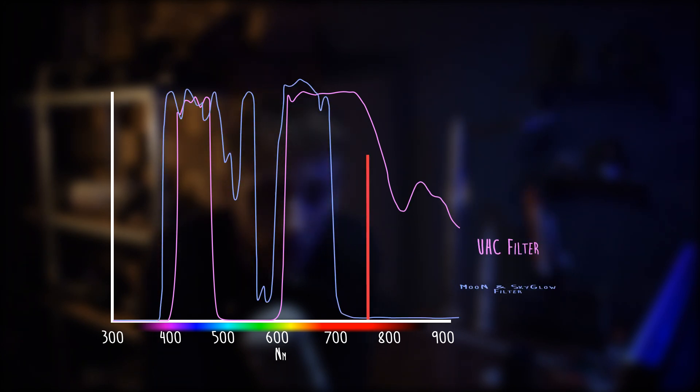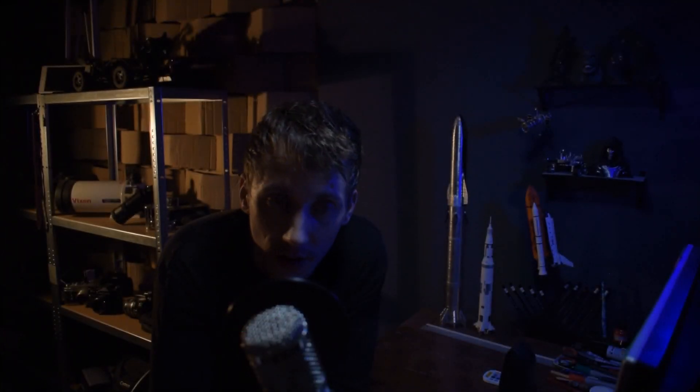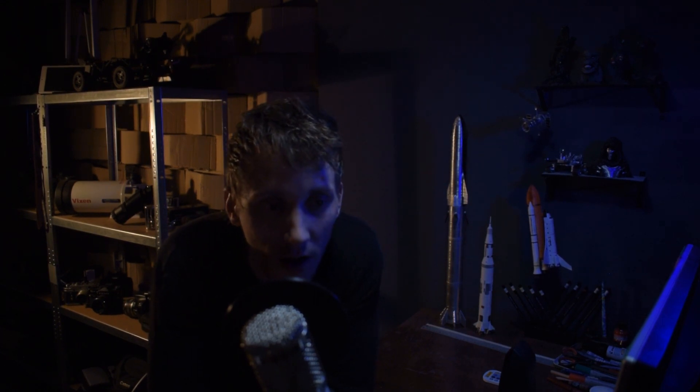Compared to the moon and sky glow filter, which still lets the red part of the spectrum through but cuts a lot of the infrared light — despite the UHC filter doing a better job at blocking light pollution, it lets in just a little too much infrared. So I think I might rethink my strategy here.